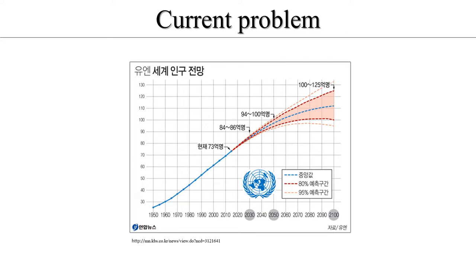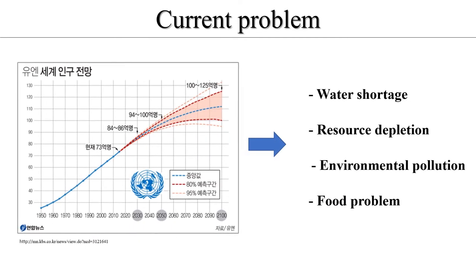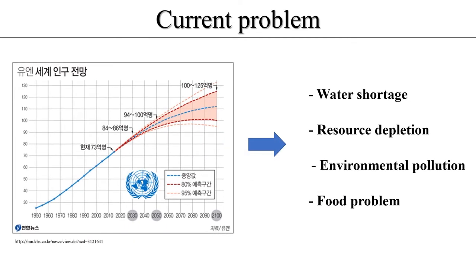The photo is a recent UN announcement. The United Nations has reported that the population will increase to about 10 billion by 2050. As the population grows, several problems can arise, such as water shortage, resource depletion, environmental pollution, and food problem. Among them, the food problem has been a big issue from the past.